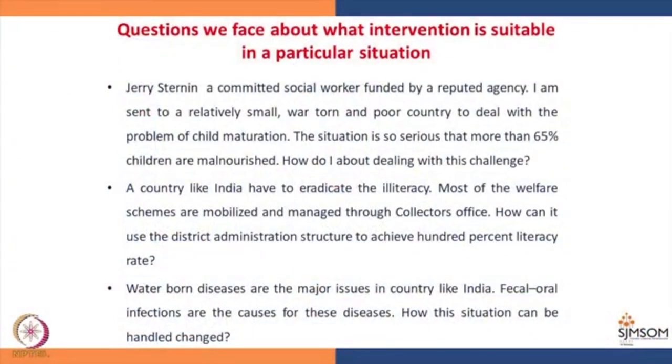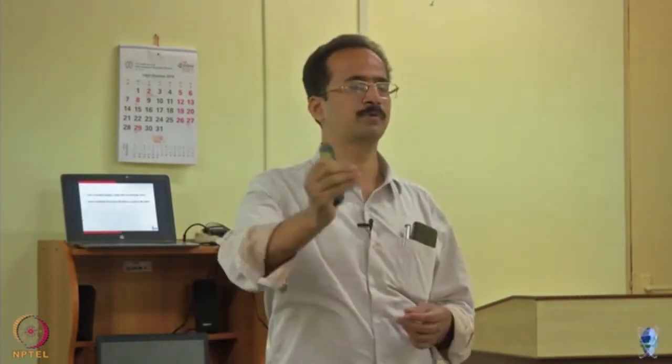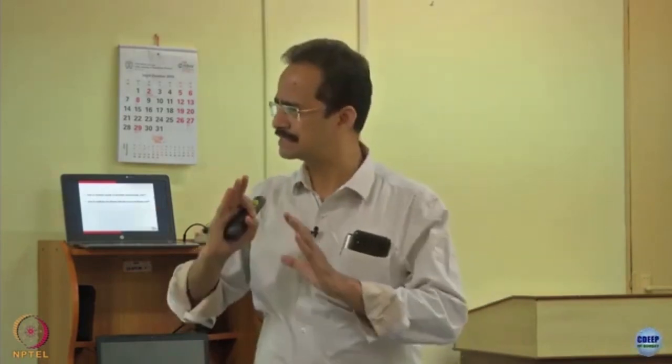Waterborne diseases are major issues in a country like India. Fecal-oral infections are the causes of these diseases. How to motivate people to keep their surroundings clean? How do you eradicate a disease like polio in a country like India? Polio can be arrested and controlled just by giving a few drops for two to three years, once a year. That is a straightforward solution, but still it took many many years to control that disease.